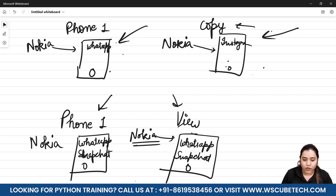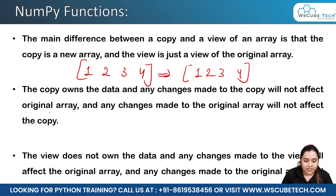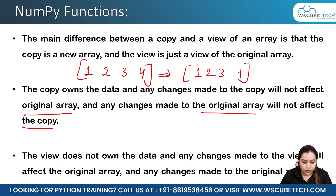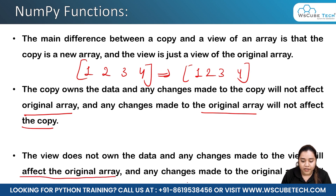To summarize: the copy owns the data, and any changes made to the copy will not affect the original array, and any changes made to the original array will not affect the copy. For view, it does not own the data — any changes made to the view will affect the original array, and any changes made in the original array will also affect the view.